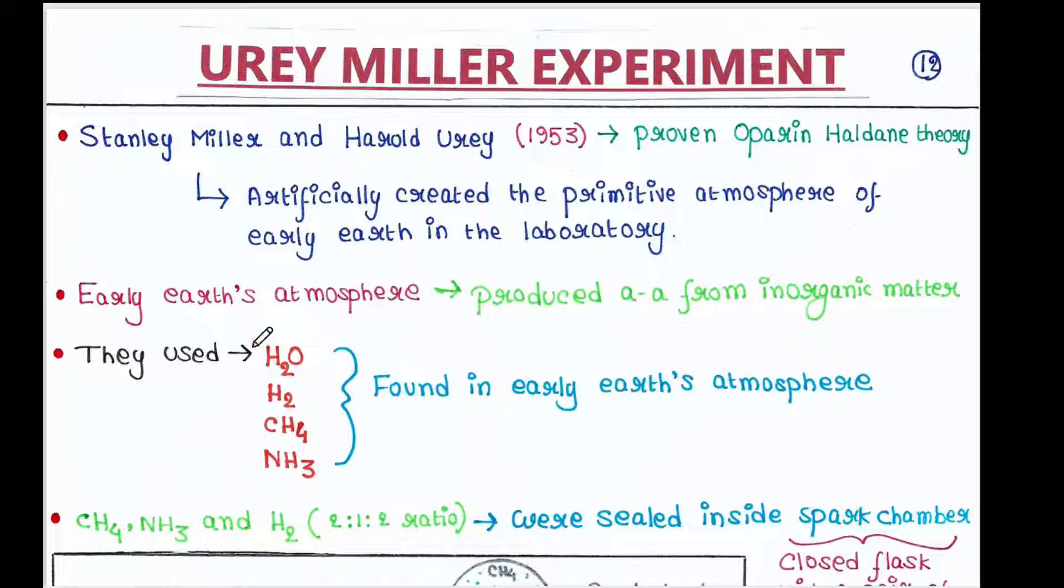They used water, hydrogen, methane and ammonia. These were found in the early earth's atmosphere. Methane, ammonia and hydrogen were used in the ratio of 2 is to 1 is to 2.